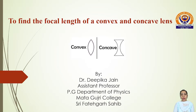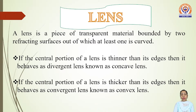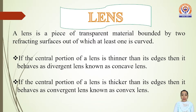Find the focal length of the convex and concave lens. First of all, what is a lens? A lens is a piece of transparent material bounded by two refracting surfaces, out of which at least one is curved. If the central portion of a lens is thinner than its edges, then it behaves as a divergent lens and is known as the concave lens. If the central portion of a lens is thicker than its edges, then it behaves as a convergent lens, known as a convex lens.